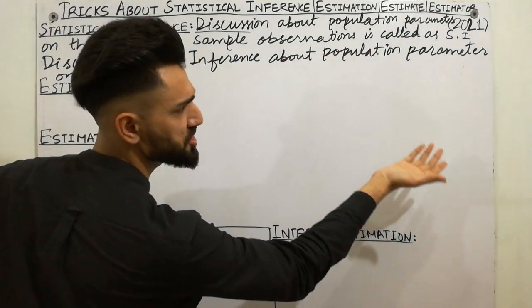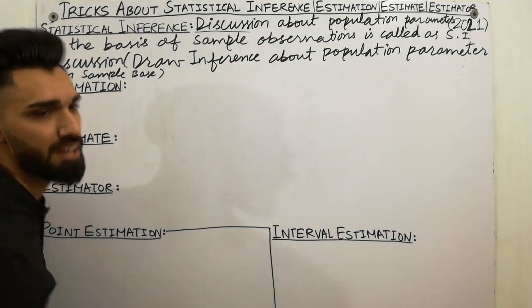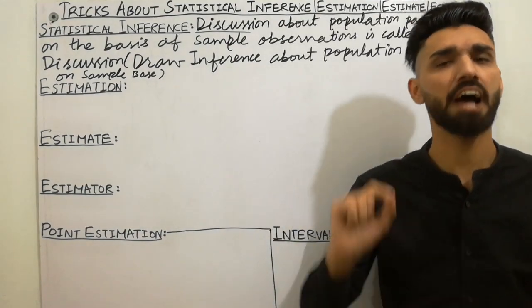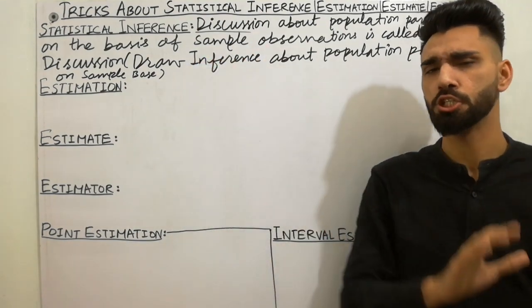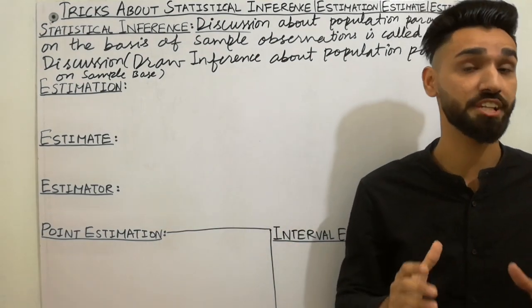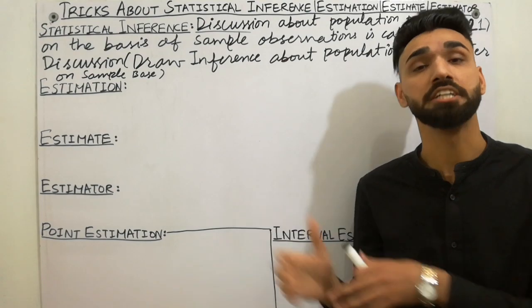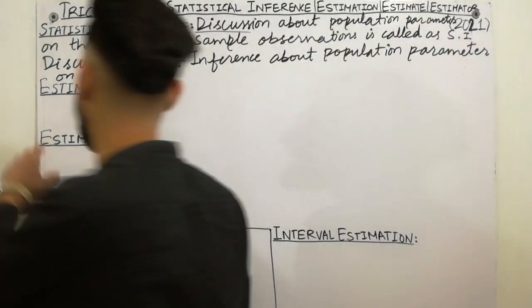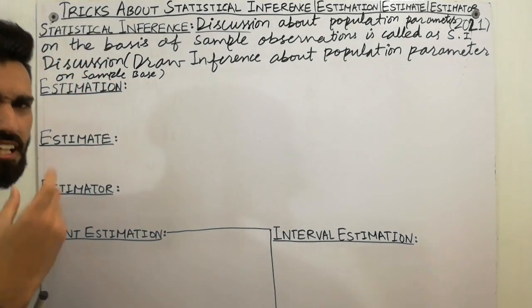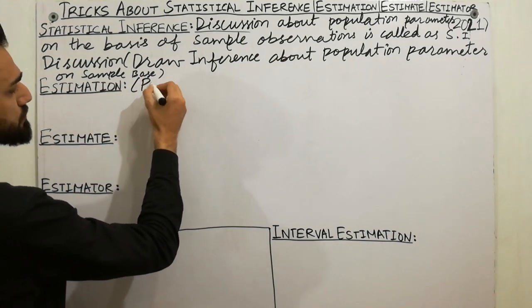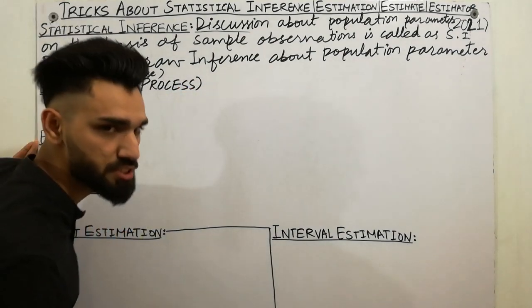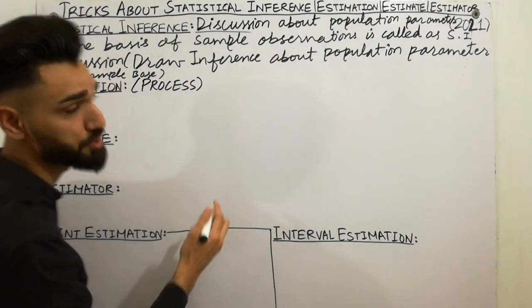Now we are going to do the most important points and secrets. You only need to remember the definition of statistical inference — you don't need to separately memorize the definitions of estimation, estimate, and estimator, because of a trick. For estimation, you have to remember just one keyword: 'process.' Estimation is the process.